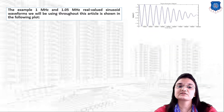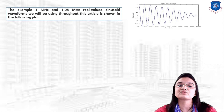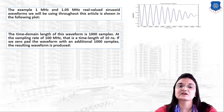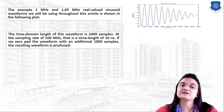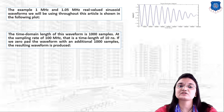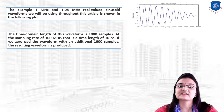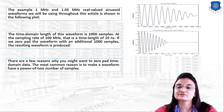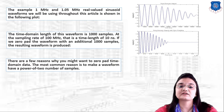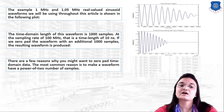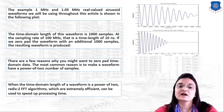In this example we have 1 MHz and 1.05 MHz real-valued sinusoidal waveforms. The time domain length of the waveform is 1000 samples at a sampling rate of 100 MHz, giving a time length of 10 nanoseconds. If we zero pad the waveform with an additional 1000 samples, the resulting waveform is produced as shown in the second image.